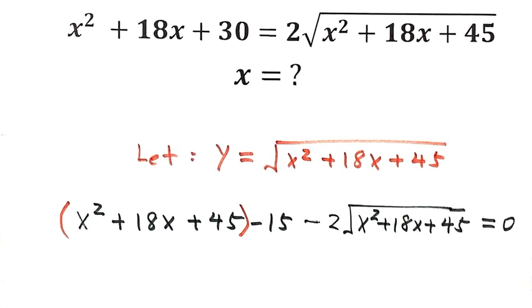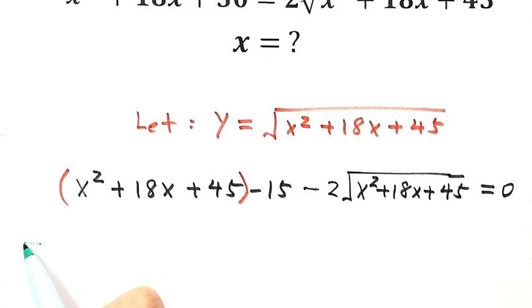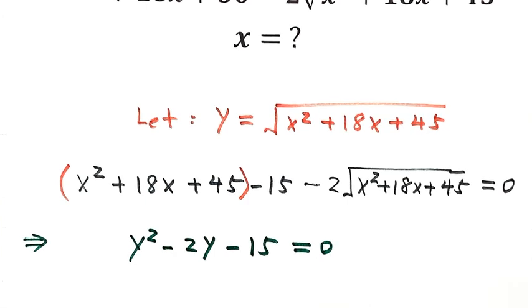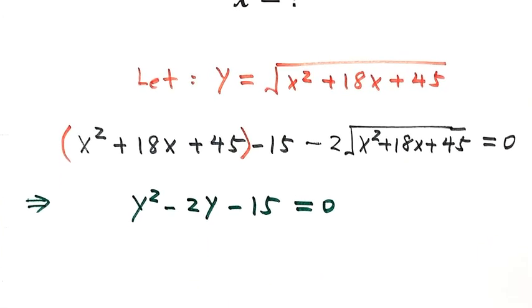So then do the substitution. Then the first part is just y squared, then minus 2y minus 15 equals 0. Then factor the left-hand side.